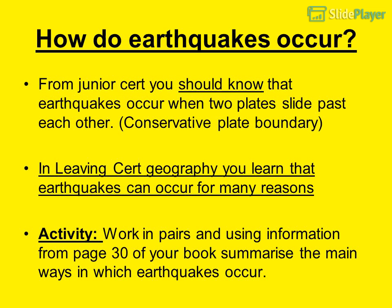How do earthquakes occur? From junior cert you should know that earthquakes occur when two plates slide past each other — a conservative plate boundary. In leaving cert geography you learned that earthquakes can occur for many reasons. Work in pairs and using information from page 30 of your book, summarize the main ways in which earthquakes occur.